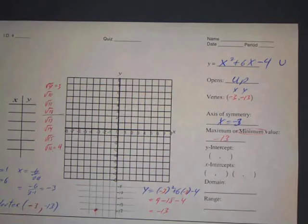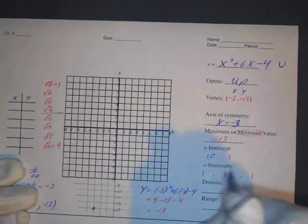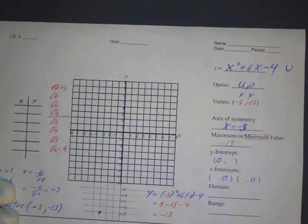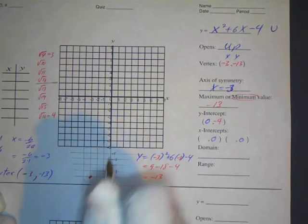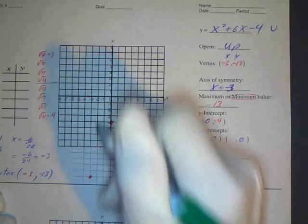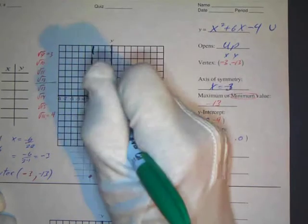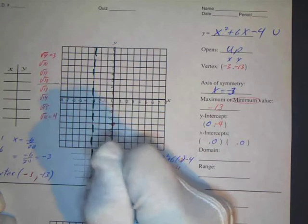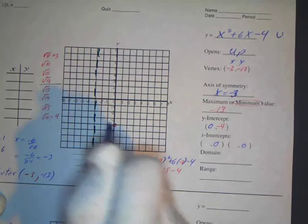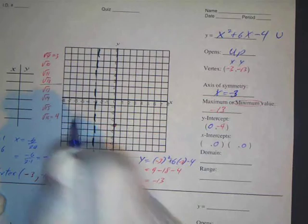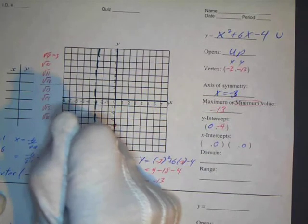The y-intercept is easy to find — just set x equal to zero. Plugging in zero: y equals 0 plus 0 minus 4, so y equals negative 4. The y-intercept is (0, negative 4). I'll plot that point and draw the axis of symmetry as a dashed line at x equals negative 3. By symmetry, there's also a point at (negative 6, negative 4) on the other side of the axis.